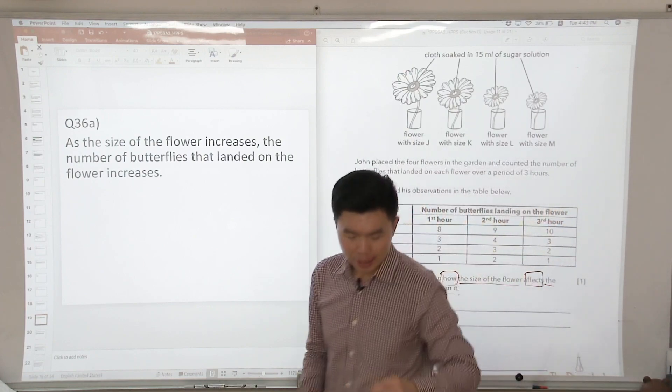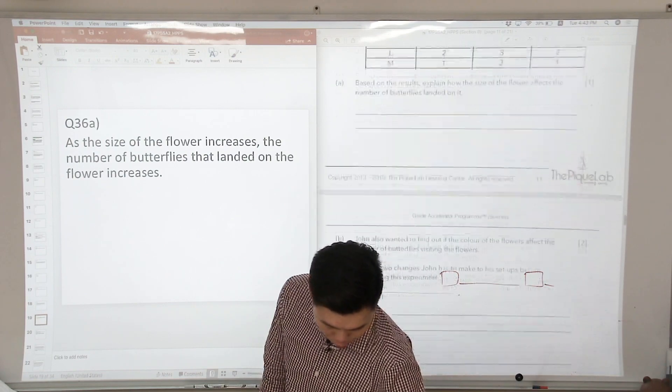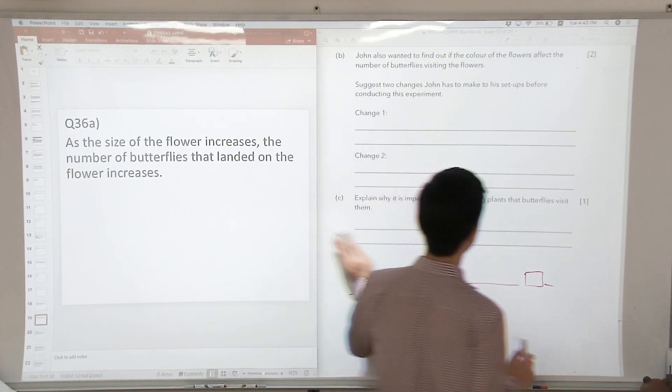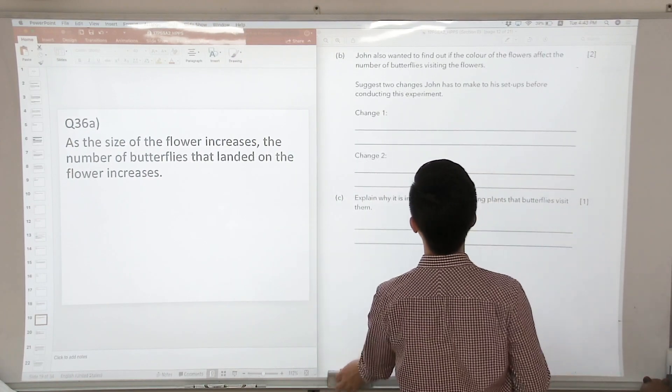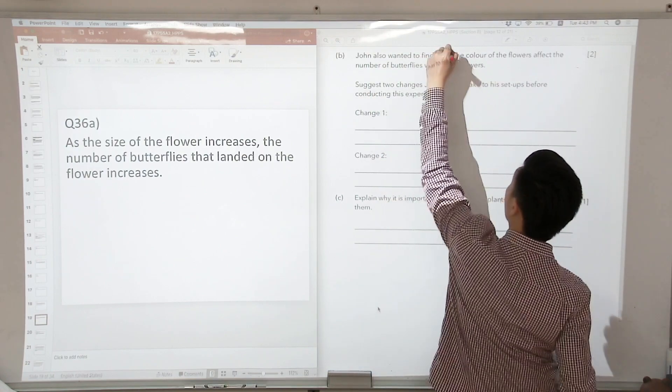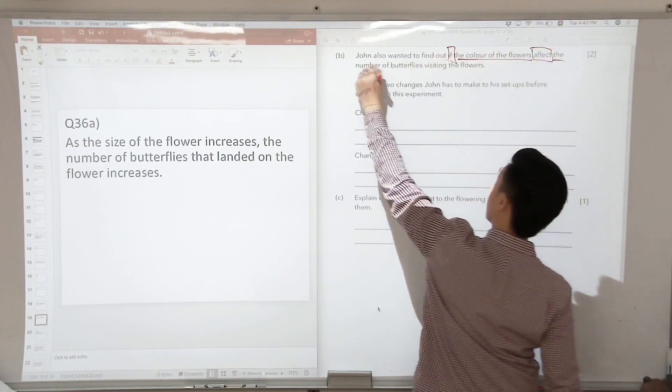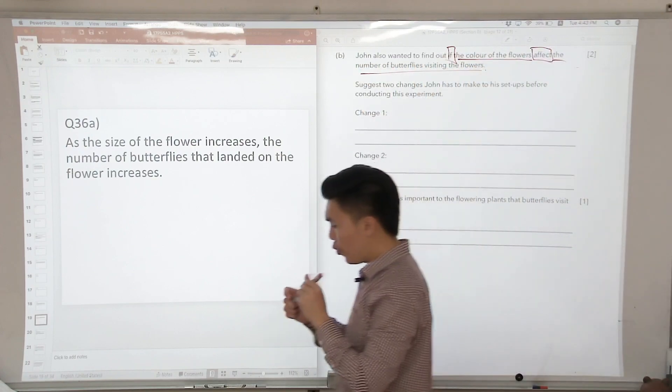Let's look at the next part of the question. John also wanted to find out if the color of the flowers affect the number of butterflies visiting it. So if is my keyword - if something affects something. So now we have the two variables again.